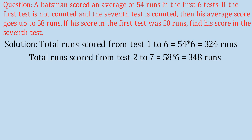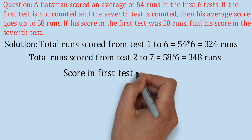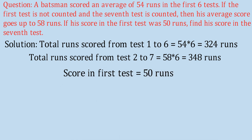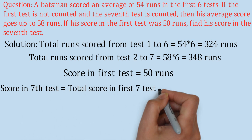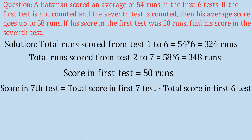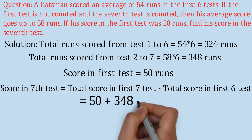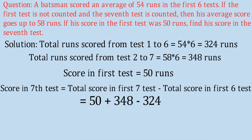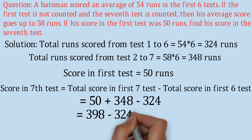Score in the first test is given as 50 runs. Score in the seventh test equals total score in first seven tests minus total score in first six tests. Total score in first seven tests = score in first test plus score from second to seventh = 50 + 348 = 398. So the answer is 398 minus 324 equal to 74 runs.